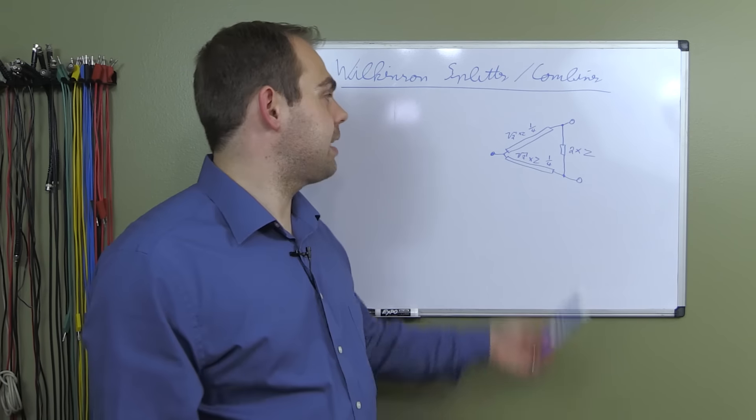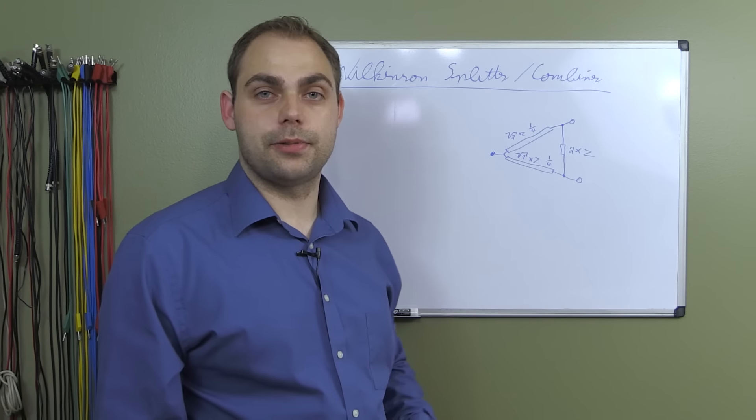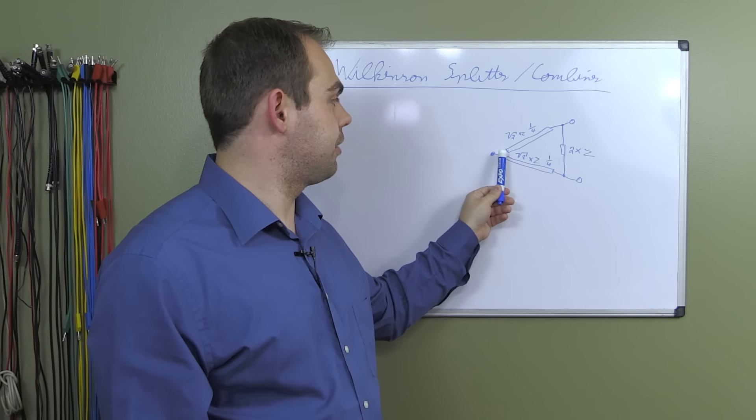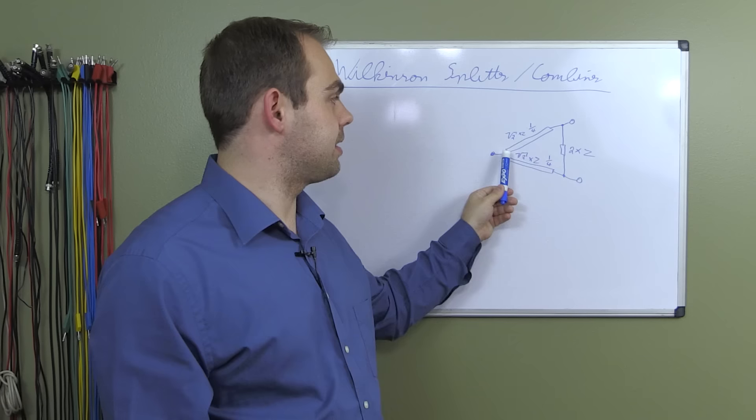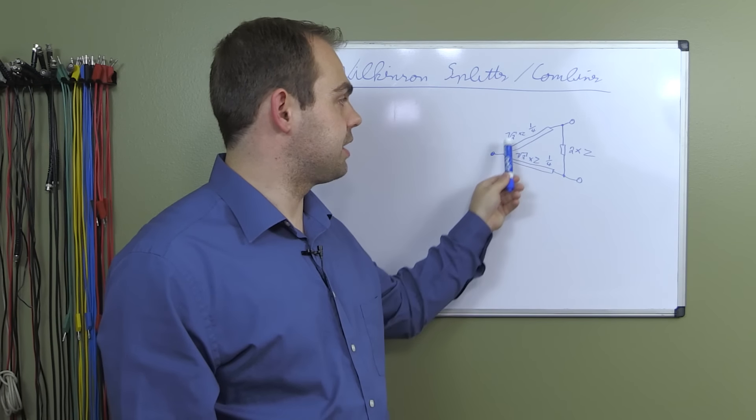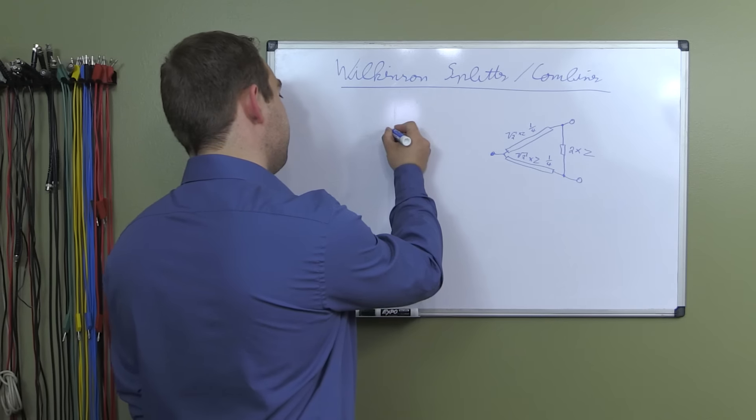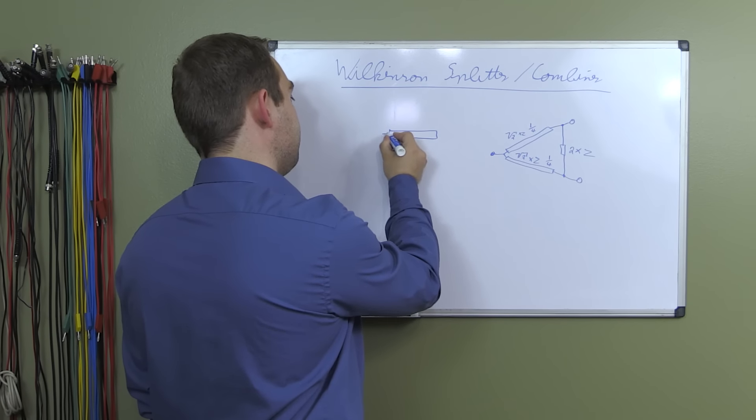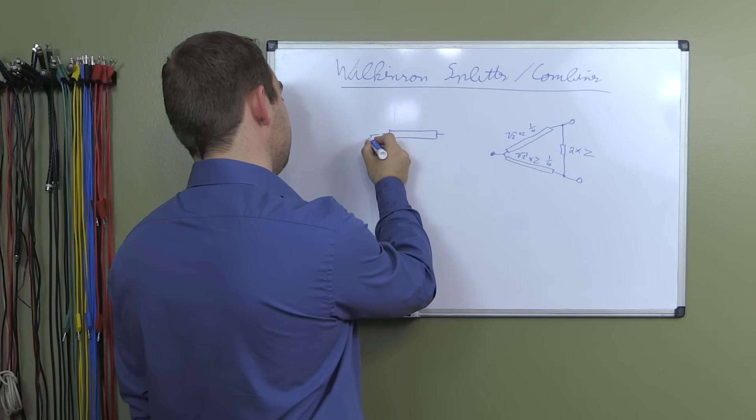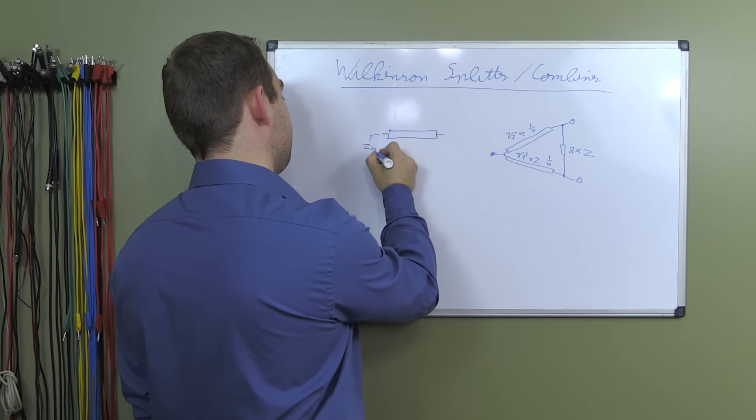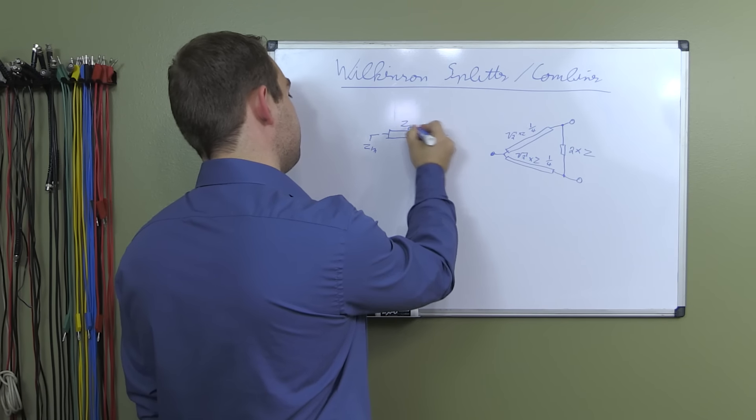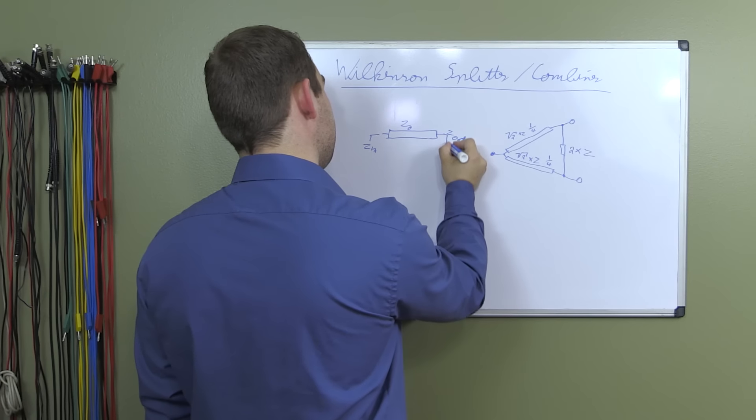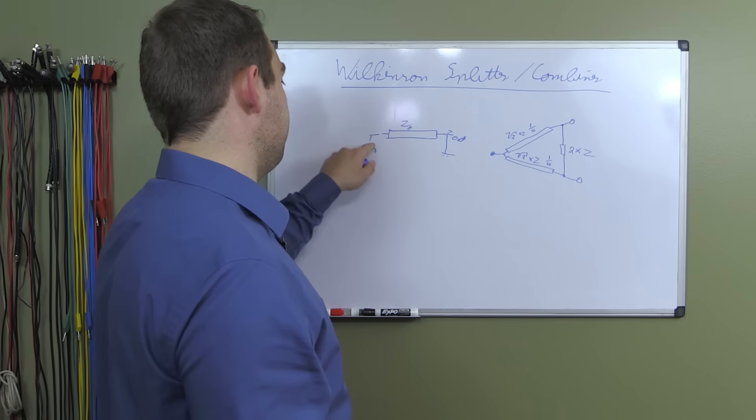The reason being that those quarter wave steps act as a transformer because the impedance presented at this port is going to be a different one than the input impedance presented here. So you have to transform between that and a quarter wave line can do this in a very easy way. So you have your quarter wave step here. You have Z in, you have Z zero, and you have Z out here.